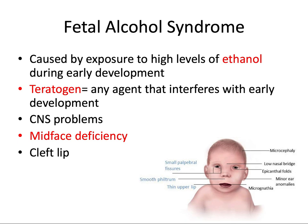Central nervous system problems that result can include difficulty with learning, communication, vision, and hearing. Abnormal facial features include a smooth philtrum — the ridge between the nose and the upper lip — a thin upper lip, and horizontally smaller palpebral fissures, meaning the opening between the eyelids. The most important point for the board exam is mid-face deficiency. There's also an increased chance of cleft lip in these syndromic patients.